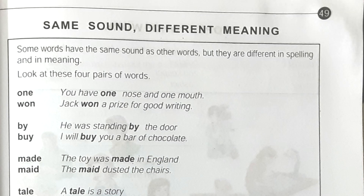Hello friends, hope you're fine. I am again with you and I'm going to discuss Junior English Book 1, page number 49. Today's topic is 'same sound, different meaning.' Here it's written: some words have the same sound as other words but they are different in spelling and meaning.